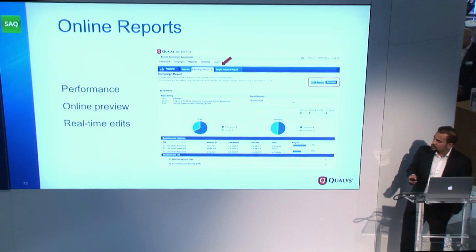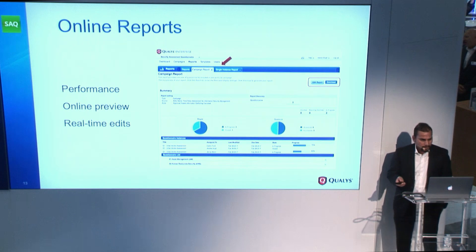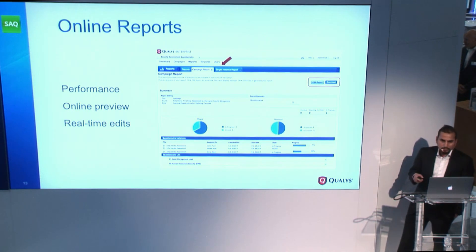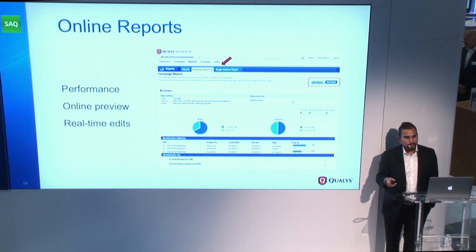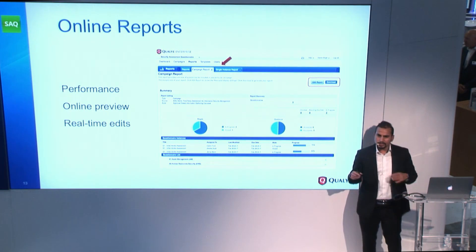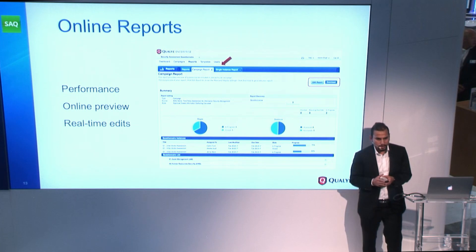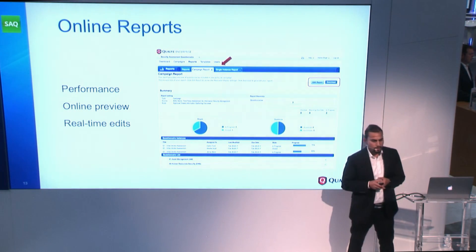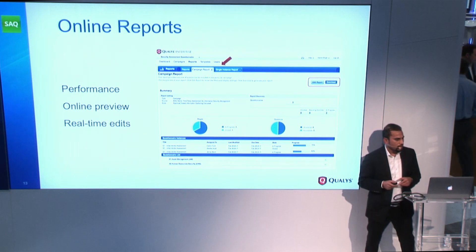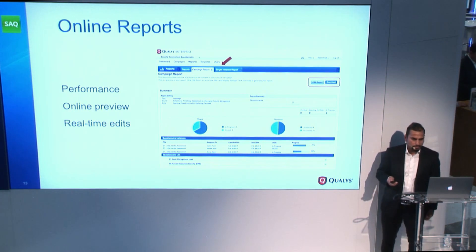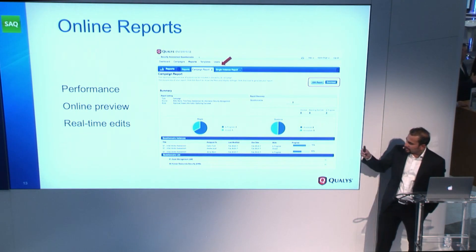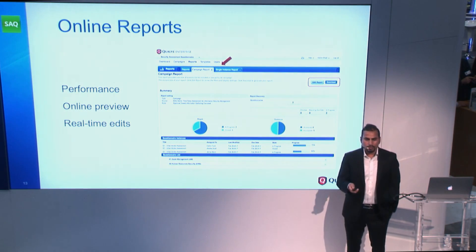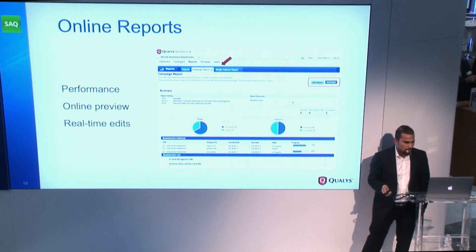I'm going to switch gears and quickly talk about key features we've been working on. We introduced online reports, which drastically improve reporting performance and provide an online preview so you can quickly get to the data you need. You can filter responses based on criticality of the question and the weight of the score, edit in real time, and once the reports look the way you want, quickly download them.